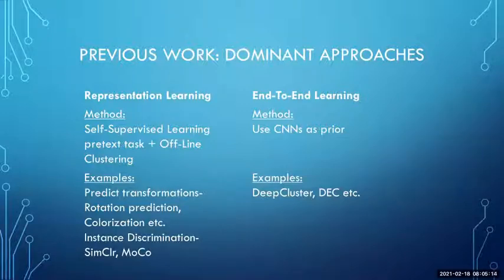In end-to-end learning, they use CNNs as prior. So the whole idea behind this is that the neural network and the clustering are coupled together, and the losses are combined together to update the neural network. It's done all together in one full epoch. Throughout every epoch, the neural network and the clustering are being updated. Examples are DeepCluster, DEC, and there are some other additional ones that are available.